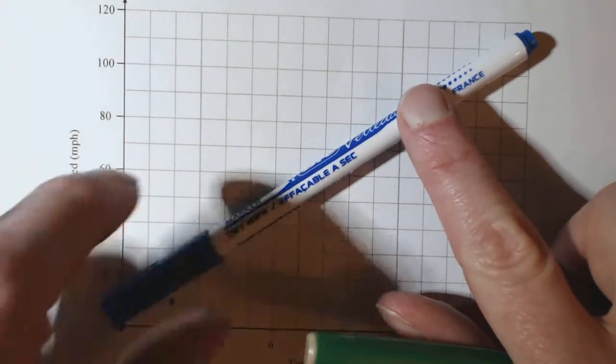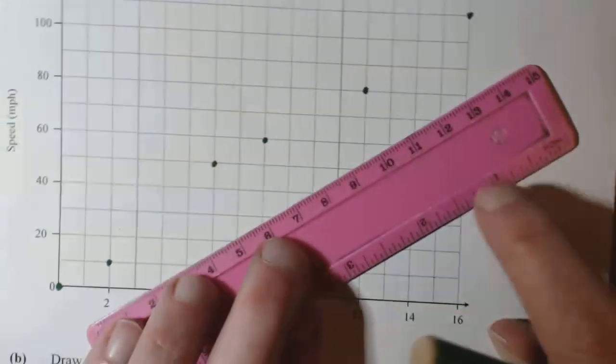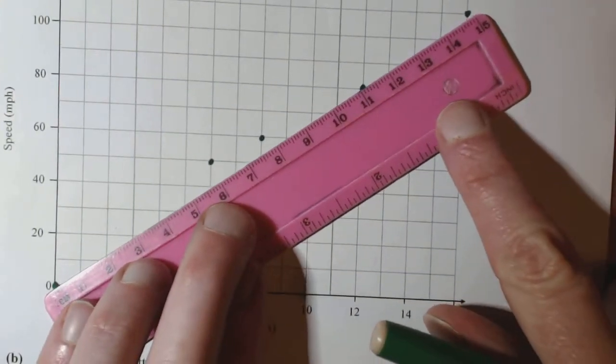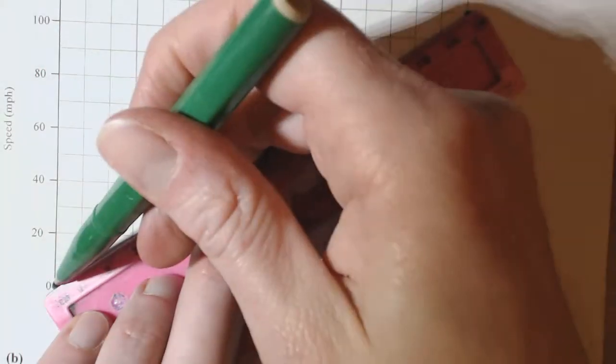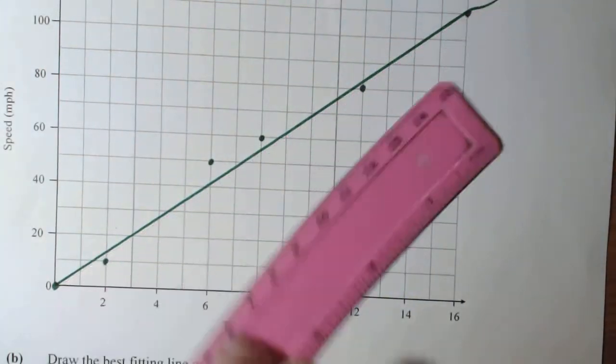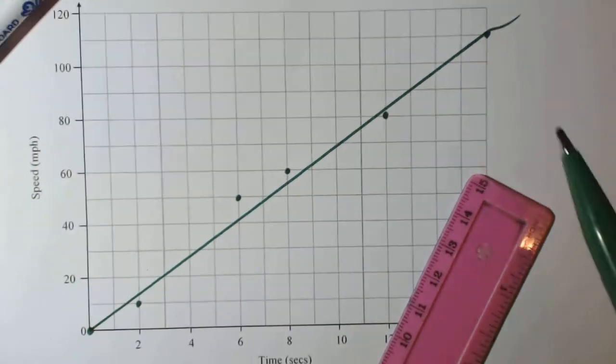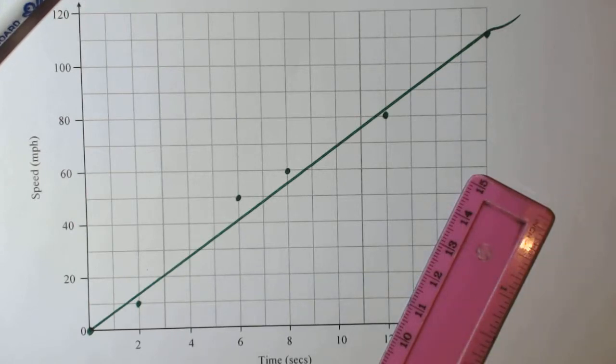So obviously, we need to replicate that as a line. So if we do something similar to this, I'll then draw this. And that's, apart from the wee bit at the end, that's not too bad a line of best fit.